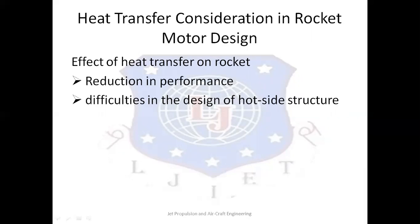Rocket motors never reach thermal equilibrium during their firing. The temperature of all components exposed to heat flow increases continuously during operation. In good thermal design, the critical locations reach a maximum allowable temperature shortly after the motor stops running. The nozzle components rely on their heat absorbing capacity and slow heat transfer to withstand the stresses and strains imposed by the thermal gradients and loads. The maximum allowable temperature for any motor material is just below the temperature at which excessive degradation occurs.